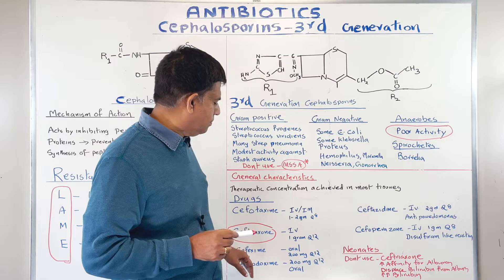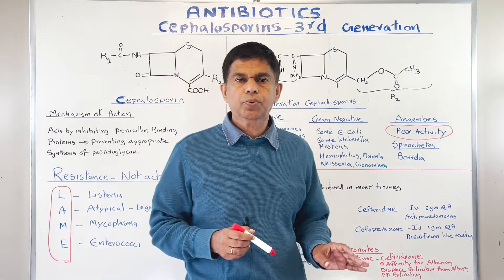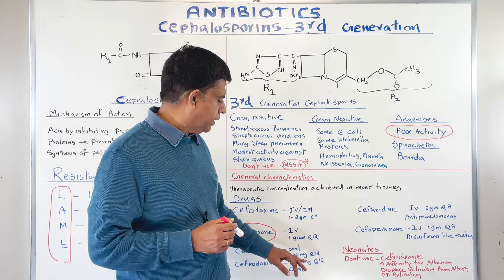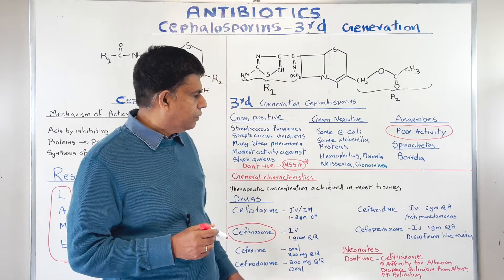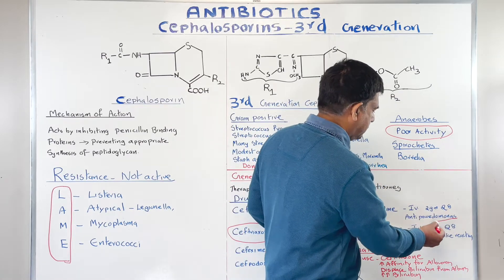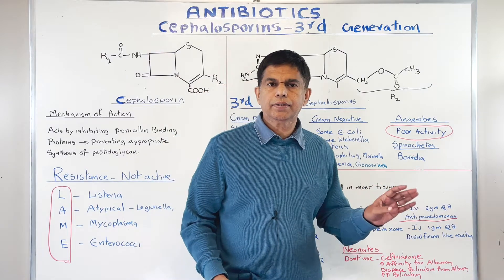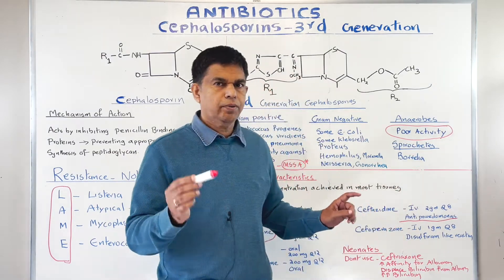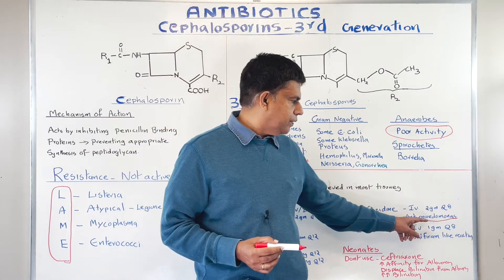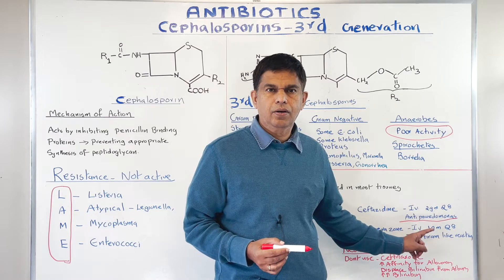Next we have cefixime, given orally at 200 mg every 12 hours. If you want an oral third generation cephalosporin, you can use cefixime. And then ceftazidime is very, very important — look at the anti-pseudomonas coverage. You do have some pseudomonas coverage with third generation cephalosporins. Ceftazidime is a good drug for pseudomonas. And cefoperazone, given IV at 1 gram every 8 hours — it can cause a disulfiram reaction, like with alcohol.